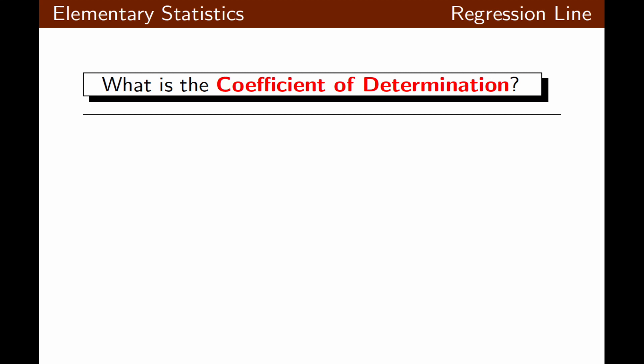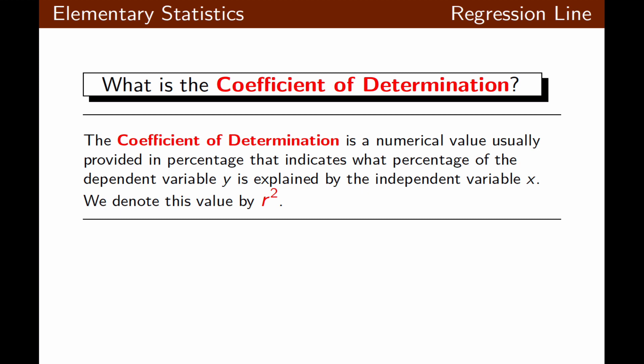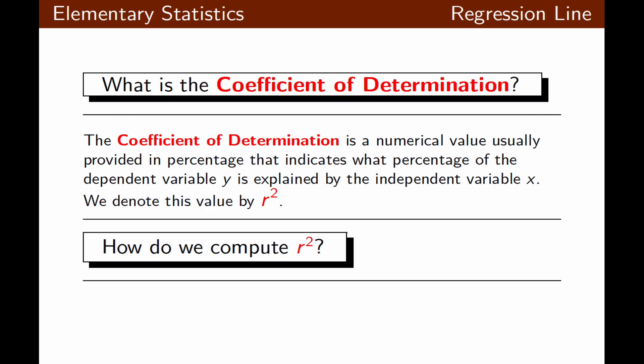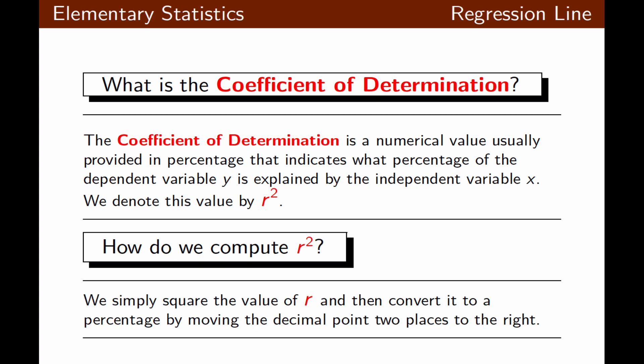What's the coefficient of determination? The coefficient of determination is a numerical value, usually expressed as a percentage, that indicates what percentage of the dependent variable y is explained by the independent variable x. It is denoted by r squared. To compute r squared, we simply square the value of r and then convert it to a percentage by multiplying by 100.